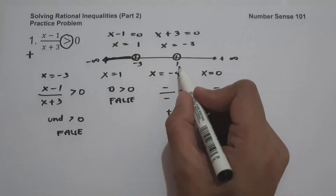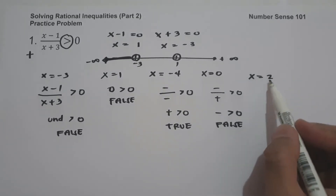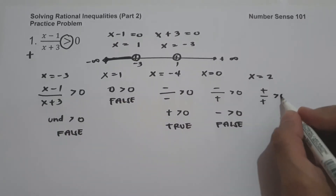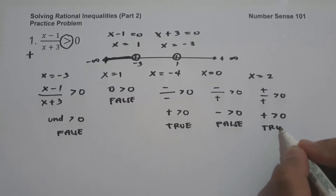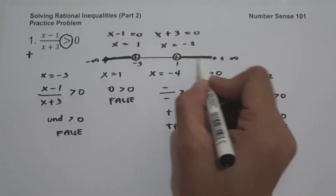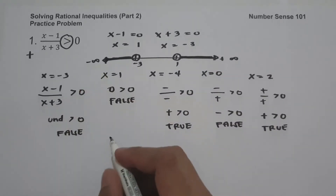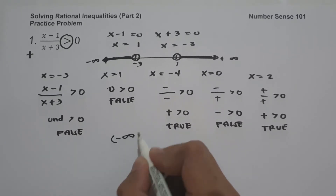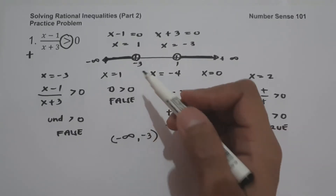Let's have a number greater than 1, say x equals 2. So 2 minus 1 is positive, and 2 plus 3 is also positive, giving positive divided by positive — positive greater than 0, so this is true. I'm going to shade this region. To write the answer, we start with parenthesis, negative infinity, comma, negative 3, and since negative 3 is not included, I'm going to use a parenthesis for negative 3.